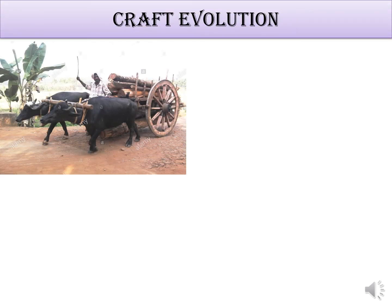Craft evolution is what our ancestors used. Take the bullock cart — there is no formal design for it. There is no specification for how much the diameter of the wheel should be, how much load it can bear, or how many bulls are required for dragging a given weight. There is no calculation; it depends purely on animal power.